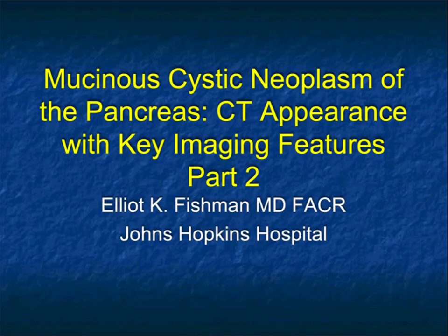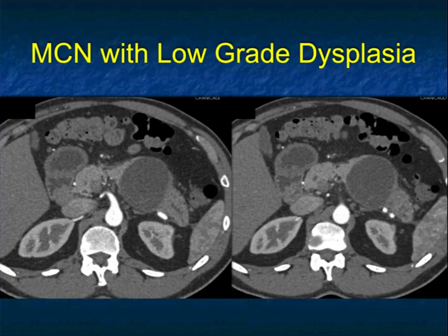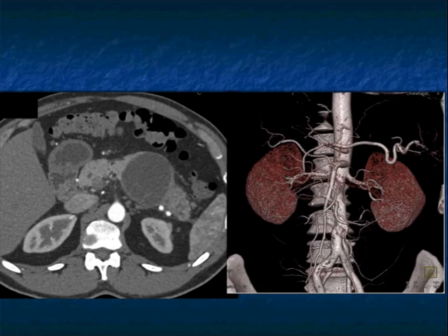Hi, this is Elliot Fishman, and welcome back to part two of our talk on mucinous cystic neoplasms. In part two I'm going to show you another set of cases. I left off with this case before. This case might be a touch unusual — you vaguely see the pancreatic duct. Differential: 45-year-old female, location, appearance. This was an MCN — not very tricky.